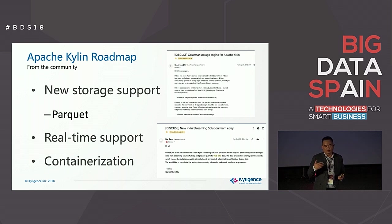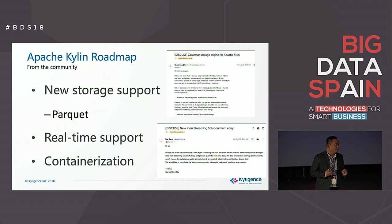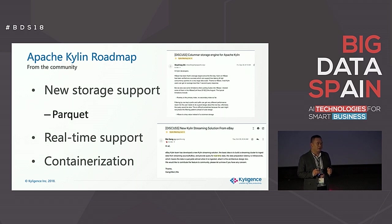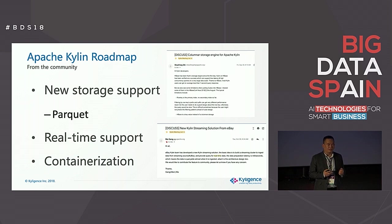Another thing is containerization. Everybody is moving to Kubernetes. The deployment for Hadoop-dependent Kylin is still very complicated. We just published a blog — we can now submit the open-source Kylin Spark jobs to a Kubernetes cluster, and it already works. We're trying to make it easier to use. Most of these features are targeted for packaging in a release as Apache Kylin 3.0, which I think should happen in the next half year.